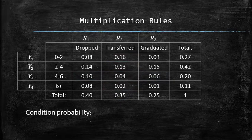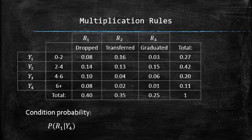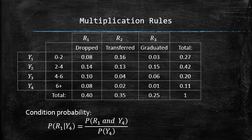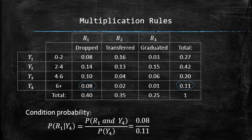Consider the conditional probability formula again. Let's find another conditional probability — for example, of R1 given Y4 — using the conditional probability formula, where the numerator is the joint probability of R1 and Y4, and the denominator is the marginal probability of Y4, which we compute to get 0.73.